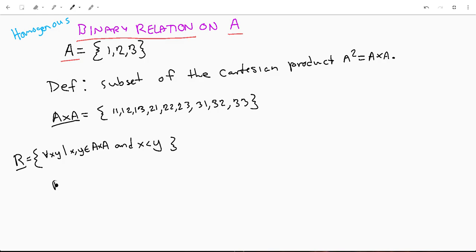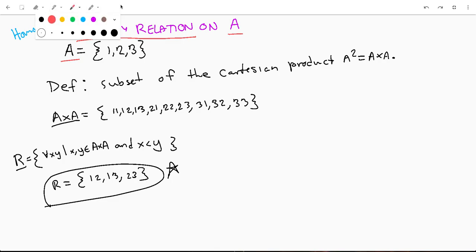So R would end up being equal to (1,2), (1,3), and (2,3). And that would be it. These are all of the pairs in that Cartesian product that meet our specifications to belong to our relation R. So this is a very basic binary relation, the less than symbol.